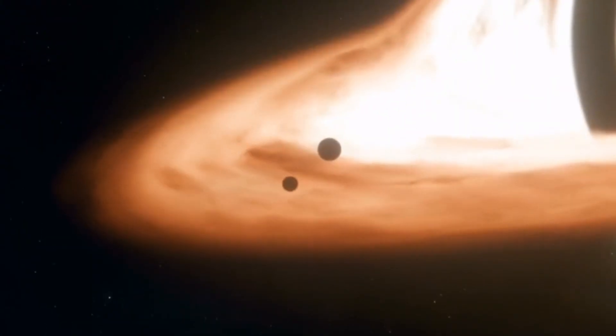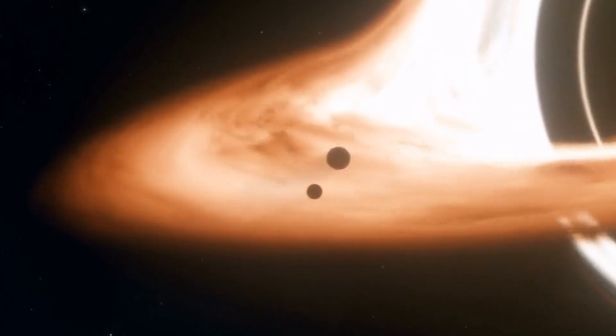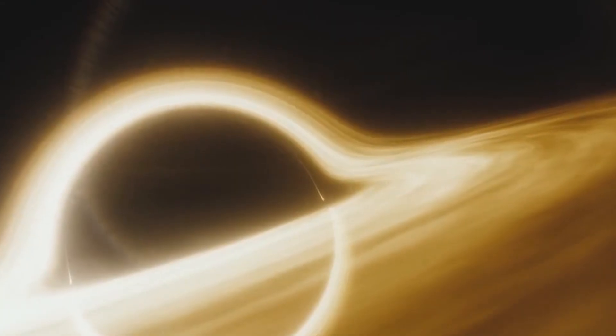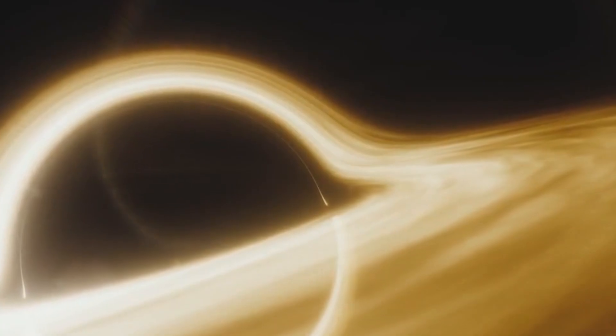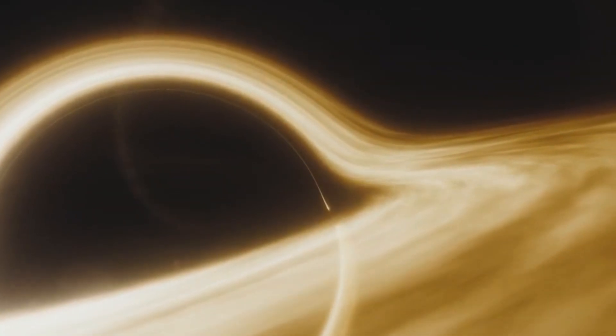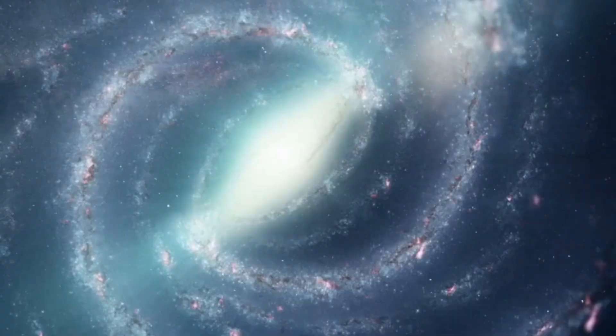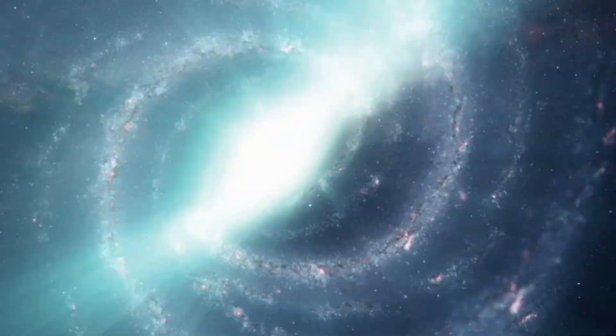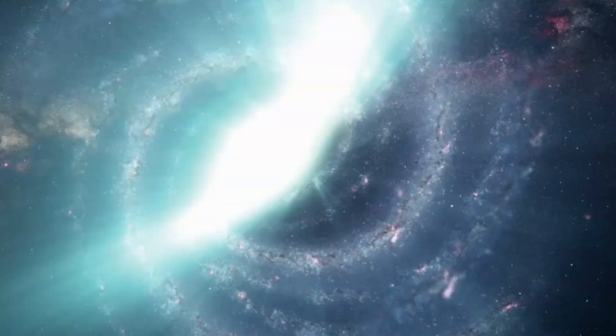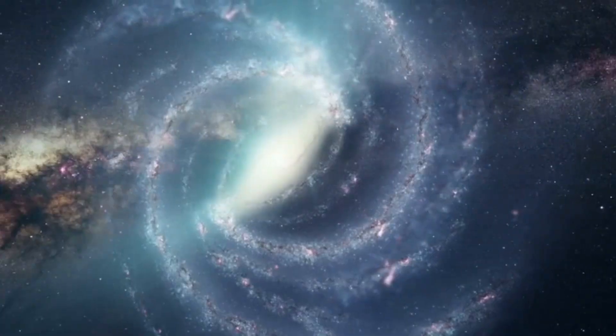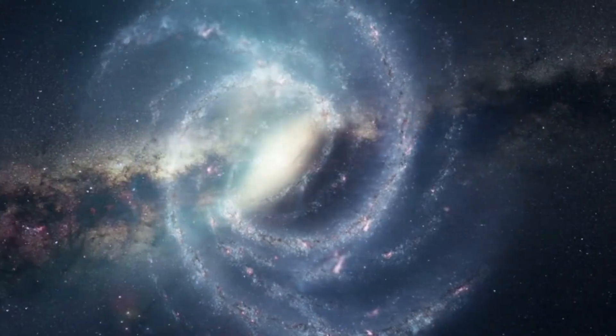The event horizon is the point of no return. It's an invisible boundary where the warping of space-time becomes so severe that nothing, not even light, can escape. It isn't a physical surface like the ground beneath your feet, but rather a region in space where the force of gravity becomes inescapable. Once an object, whether it's a star, a spaceship, or even a beam of light, crosses this boundary, it's doomed to fall inward, never to be seen again.